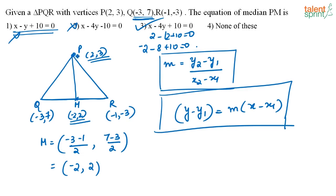Even checking with point P alone eliminates the first two options, leaving only the third. Since there is also a 'none of these' option, we double-check with point M as well to be sure. If 'none of these' were not there, you could go directly with option 3.